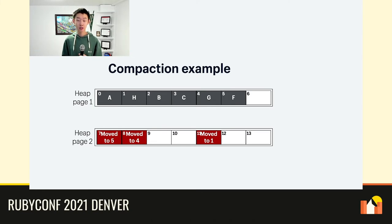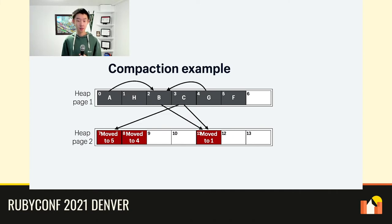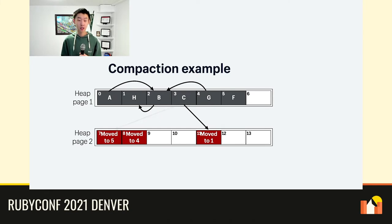But we're not done yet — we must do the reference updating step. We check the references of each object and update any reference that points to a forwarding address. Object B has one reference to a forwarding address; by reading that forwarding address we can update it to point to object H. Object C holds two references to moved objects, and we update those references to point to the correct ones. Now that we've updated all the references, we can reclaim the forwarding address slots 7, 8, and 11.